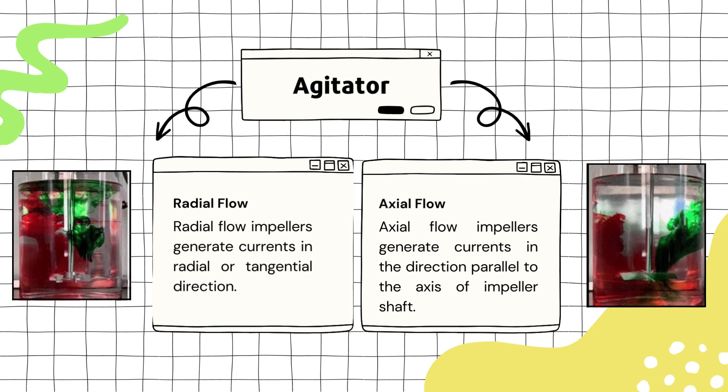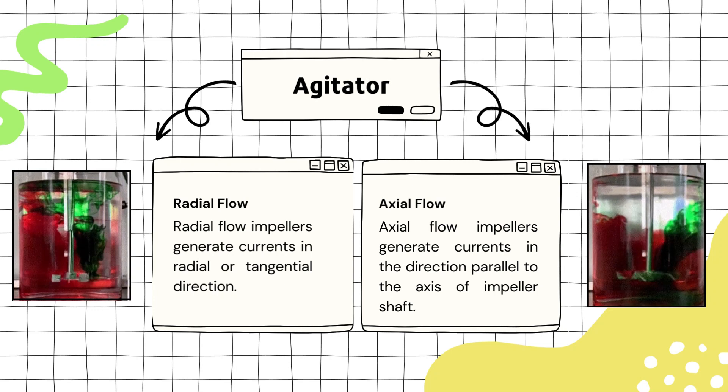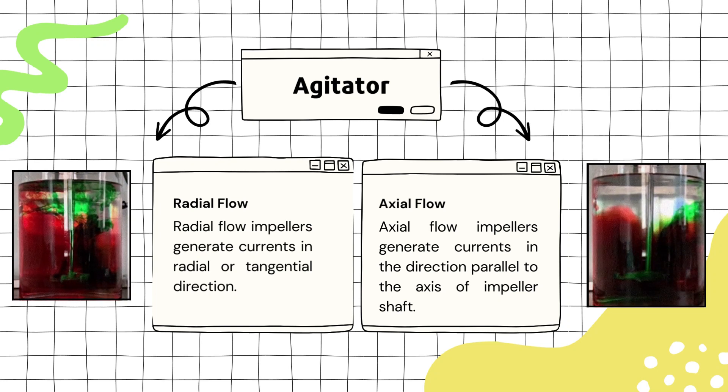The axial flow impeller generates current in the direction parallel to the axis of the impeller shaft, and for the case of radial flow impellers, it generates current in radial or tangential direction.